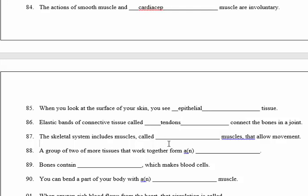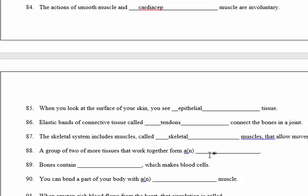Number 87: the skeletal system includes muscles called skeletal muscles that allow movement. Number 88: a group of two or more tissues that work together form an organ.